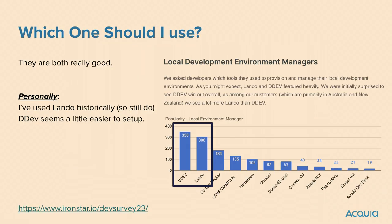Last couple of topics. If you're not familiar with the local development survey the Drupal community runs every year — originally started by Jeff Geerling back in the Drupal VM days, Iron Star took it over — this is from this last year, released around DrupalCon Pittsburgh. DDEV very slightly edges out Lando in the survey results. Doxel is on there but a bit lower. Personally I've used Lando the last several years, so I tend to still use it. But as you saw today, DDEV is a little easier to set up and is very slightly edging out Lando in the most recent survey.